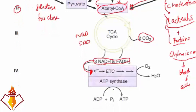These reduced substrates — NADH and FADH2 — then enter into the electron transport chain where they are oxidized, and energy is produced in the form of ATP. Oxygen is reduced to water. Oxidation and reduction take place simultaneously, which is why they are called redox reactions.